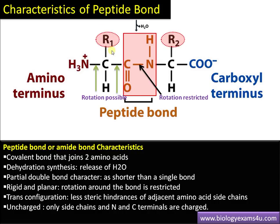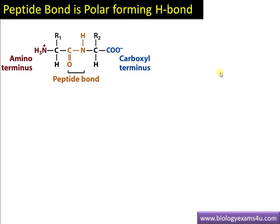The peptide bond itself is uncharged. The charged regions are the side groups — sometimes amino acids may be basic, like lysine and arginine, having a positive charge, or acidic, like glutamic acid and aspartic acid. The property of the side chain determines the charge. The amino terminal and the carboxyl terminal regions are also charged.